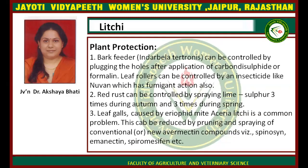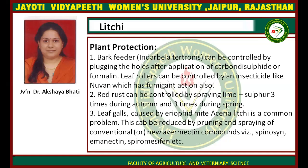For plant protection: the bark feeder insect can be controlled by injecting carbon dioxide and formalin into the bark feeder holes. Leaf-eating insects can be controlled with insecticides. Red rust disease can be managed by spraying lime sulfur three times during autumn and three times during spring. Leaf galls caused by mites can be reduced by spraying acaricides like sulfosine or emamectin.